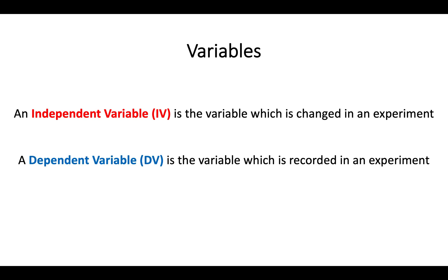The second variable is called the dependent variable, often shortened to DV. This is what is recorded or measured in an experiment to see what the effect of the independent variable was. So these are the two really key things: the IV being what you've changed in the experiment, and the DV being what you've measured or recorded.